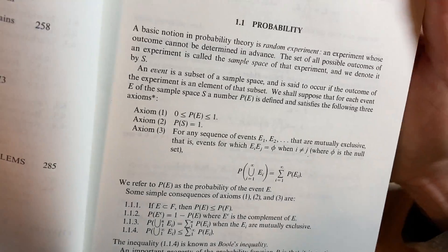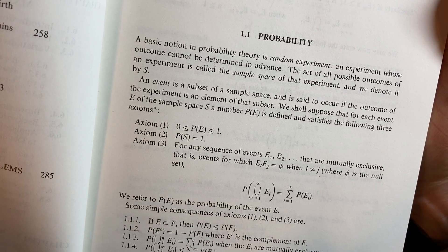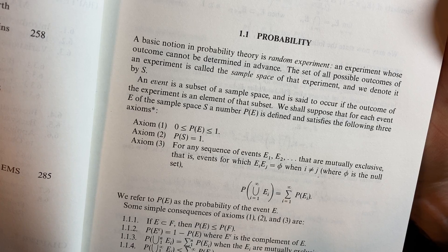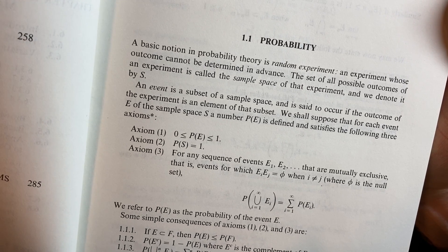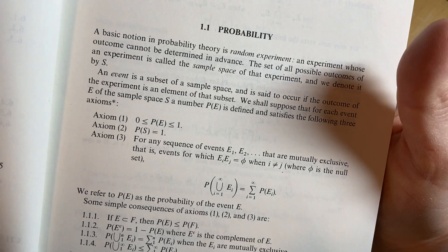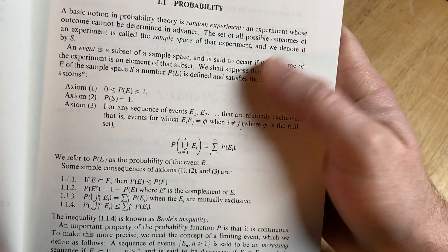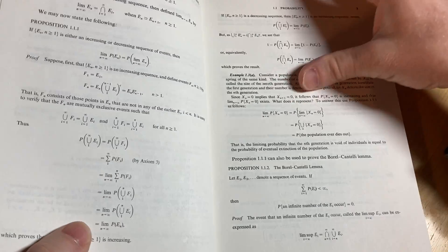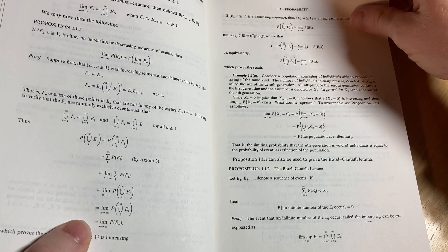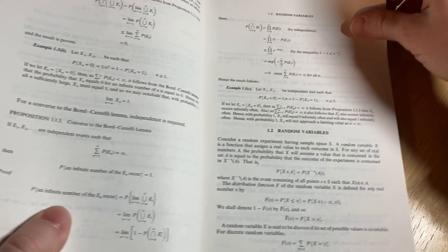And here's how it starts. So you can see the difficulty level from the beginning. A basic notion in probability theory is random experiment, an experiment whose outcome cannot be determined in advance. The set of all possible outcomes of an experiment is called the sample space of that experiment, and we denote it by S. An event is a subset of a sample space. And then it goes through and gives you these axioms. So this is stuff that's basic. And you go through and do some proofs. Some examples.